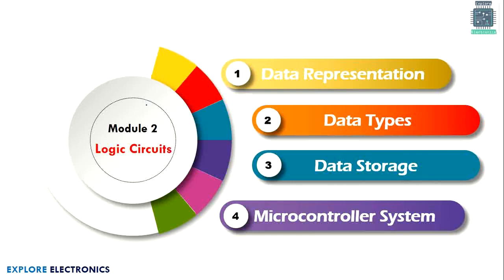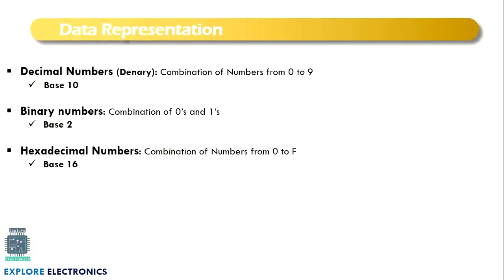First, data representation — how to represent a data or a value in digital circuits. In digital circuits, only zeros and ones are used. A combination of zeros and ones can construct numbers; that's why binary numbers have only two digits and have a base of two. Decimal numbers have digits from zero to nine — ten numbers total — giving a base of ten.